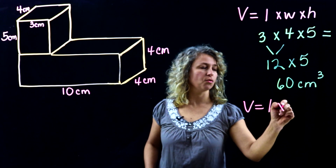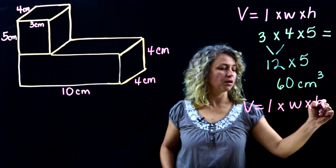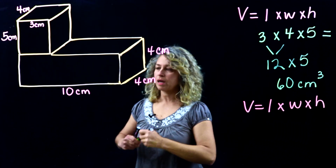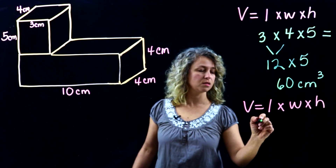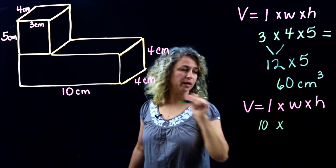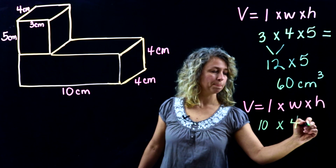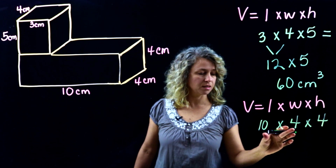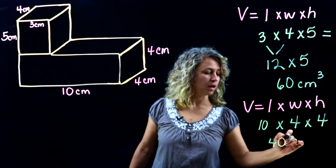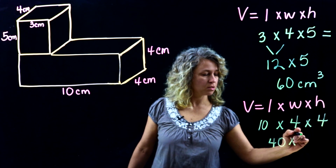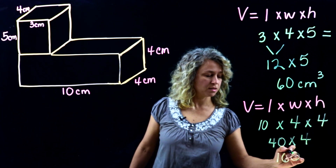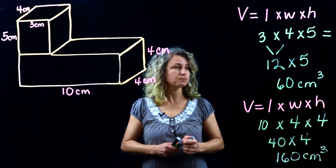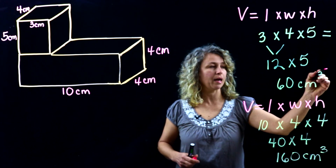Now let's find the volume for the second shape. I always like to write the formula out and fill in the values so that you make sure you fill them in correctly. The length is ten, the width is four, and the height is four. Ten times four is forty.